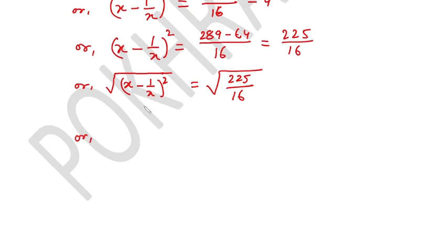Left hand side, this square and this radical will cancel each other. Then this becomes x minus 1 over x equals square root of 225 over square root of 16, that is 15 over 4.